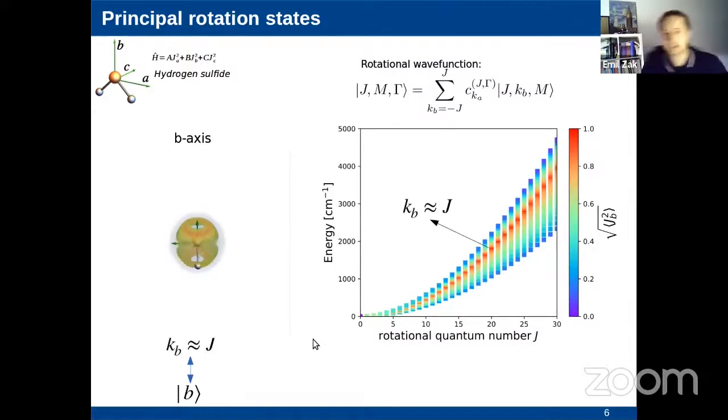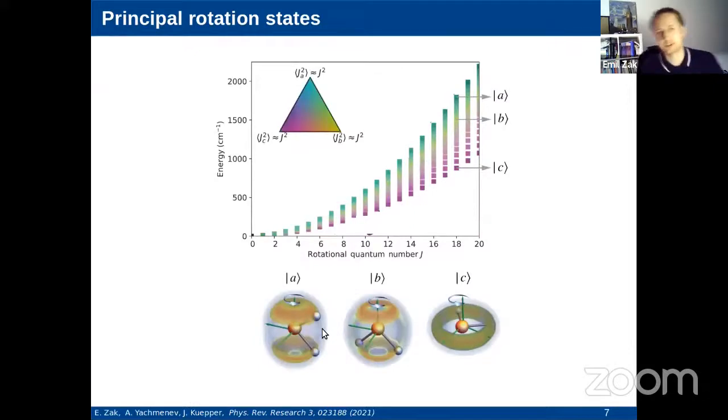We can assign the label C to these states. There are also states lying in the middle of the energy spectrum. For these states, the leading component of the angular momentum is B. All these three situations are combined in one image here, where this color coding marks the relative magnitudes of molecular frame angular momentum and respective probability densities. We have A, B and C states. The challenge now is to populate these states.